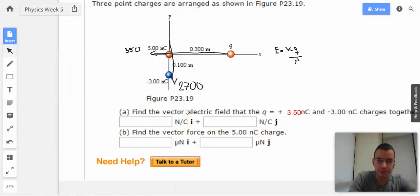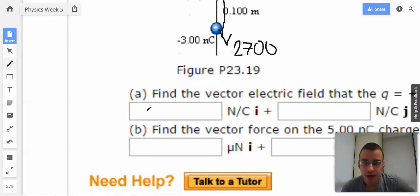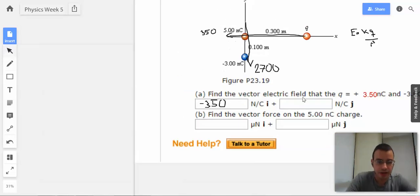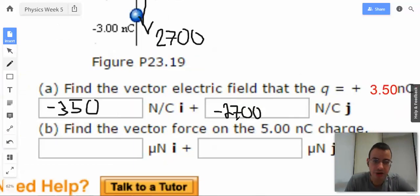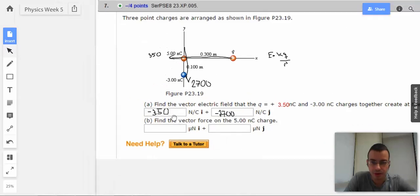So, then the electric field would then be in vector form, negative 350 because it's in a negative I direction. And then, for J, we would say negative 2700 or 2700 in a negative J direction since it's going down. All right.